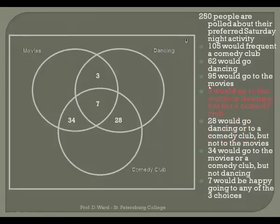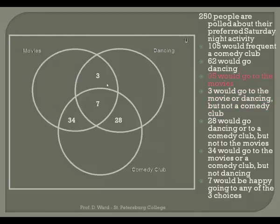Ninety-five would go to the movies. This isn't broken down — it includes everyone in this circle. I know what these three sections are (3, 7, and 34), but not the fourth. Since the total is 95, I subtract those three values from 95 to get the people who want to go only to the movies, not dancing or comedy club. That gives 51 people.